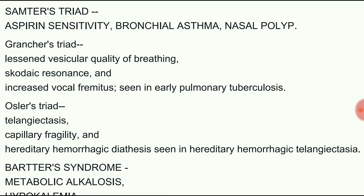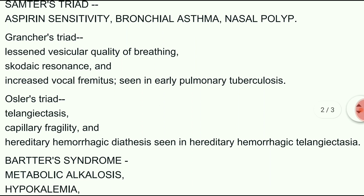Next triad is Osler's triad. It includes telangiectasia, capillary fragility and hereditary hemorrhagic diathesis, which is seen in hereditary hemorrhagic telangiectasia.